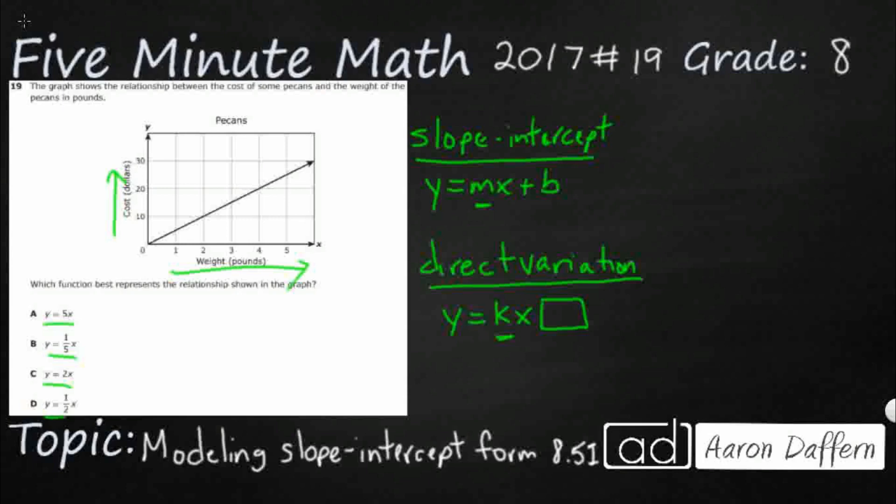So if x equals 0 on the slope-intercept form, if I put a 0 right here, that's going to cancel that out. So y is going to equal b, which means it's going to have a y-intercept and not go through the origin. But if x equals 0 on direct variation, well then if you put a 0 right there, it's going to cancel out the k, so y is going to equal 0.